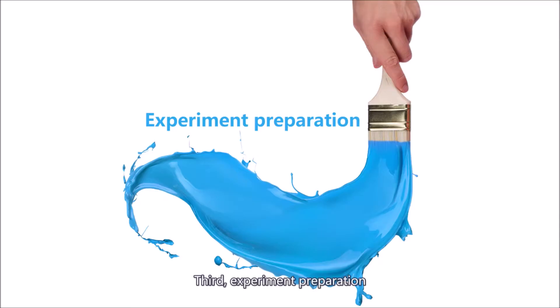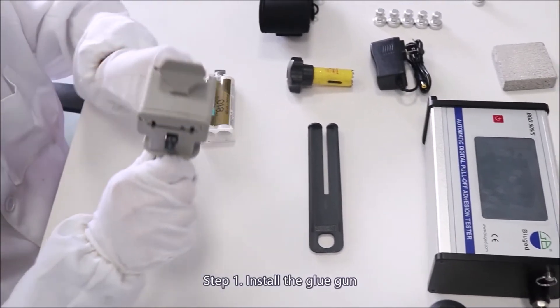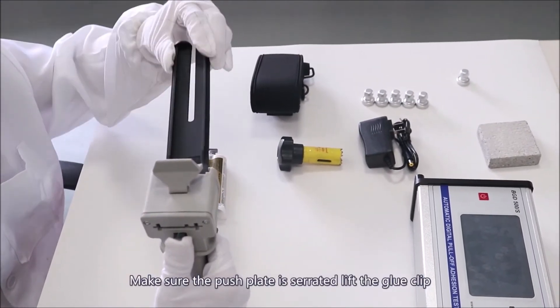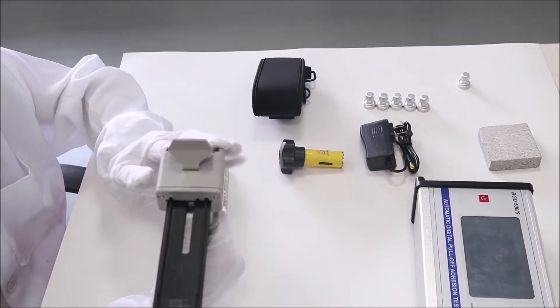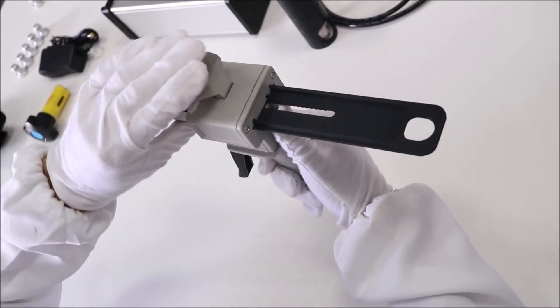Third, experiment preparation. Step 1: Install the glue gun. Put the metal piece upward and then insert the push plate. Make sure the push plate is serrated. Lift the glue clip. Put the two-component adhesive on the front of the glue gun and then fasten it.